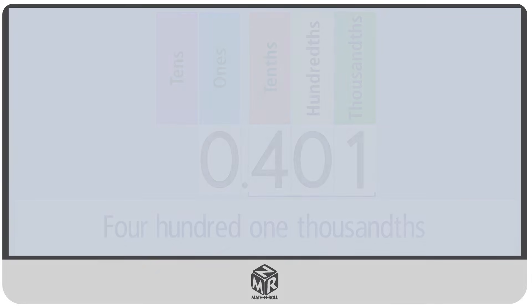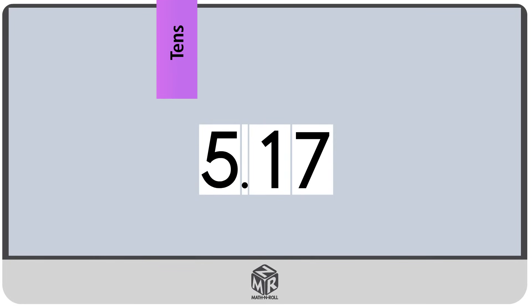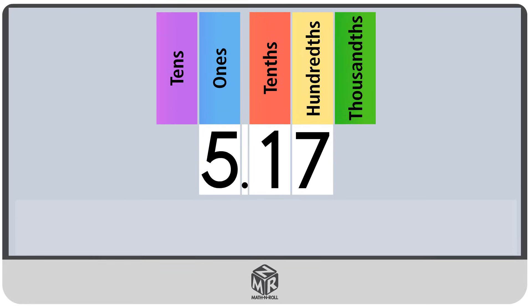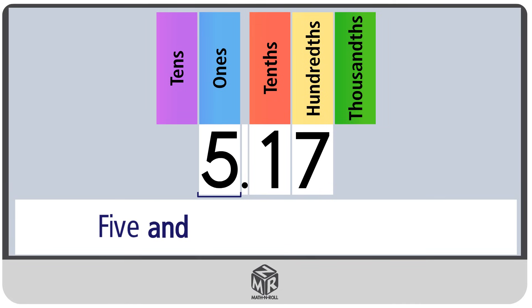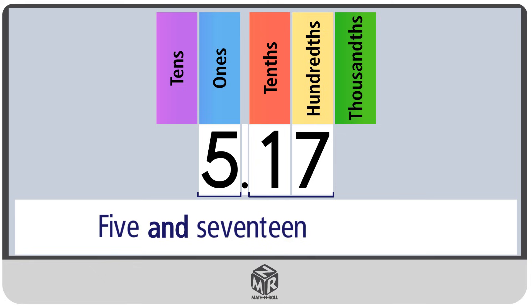Let's try another one. 5.17. First, we write the whole number part: 5. The decimal point turns into the word AND. Now we write the decimal part: 17. To finish off, we take a look at the place value of the last digit. The last digit is 7, and it's in the hundredths place. So we write 5 and 17 hundredths.